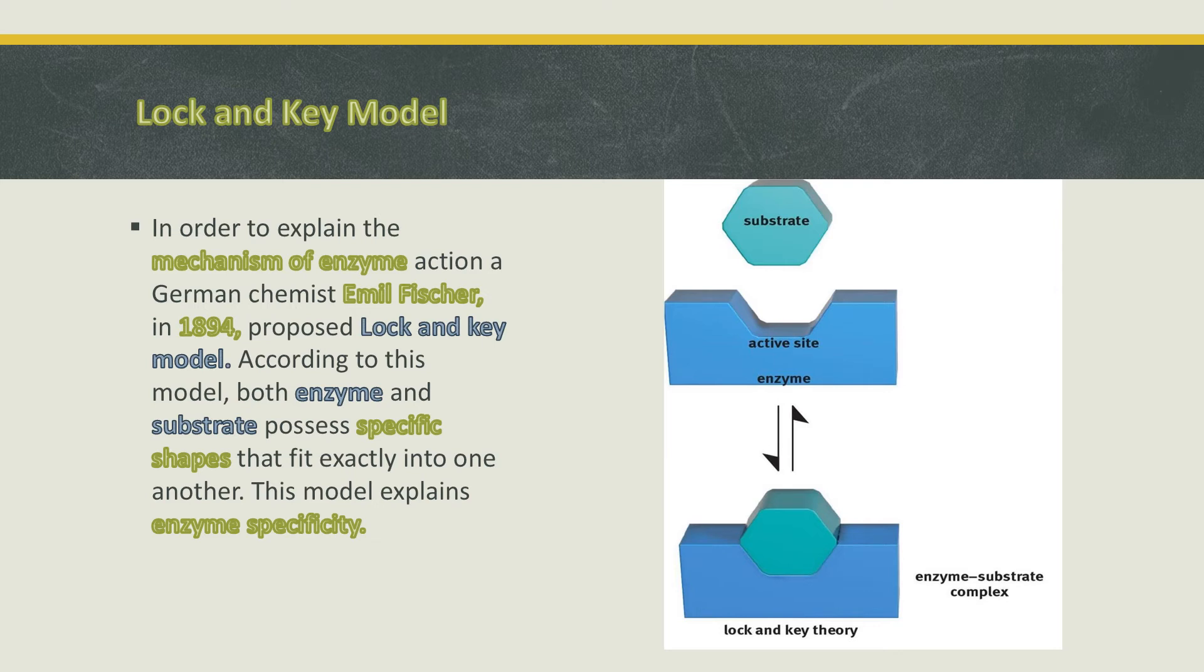But this model is not used today. This model tells the specificity of enzymes. This is the Lock and Key model. In 1894, a German chemist, Emil Fischer, proposed this model.